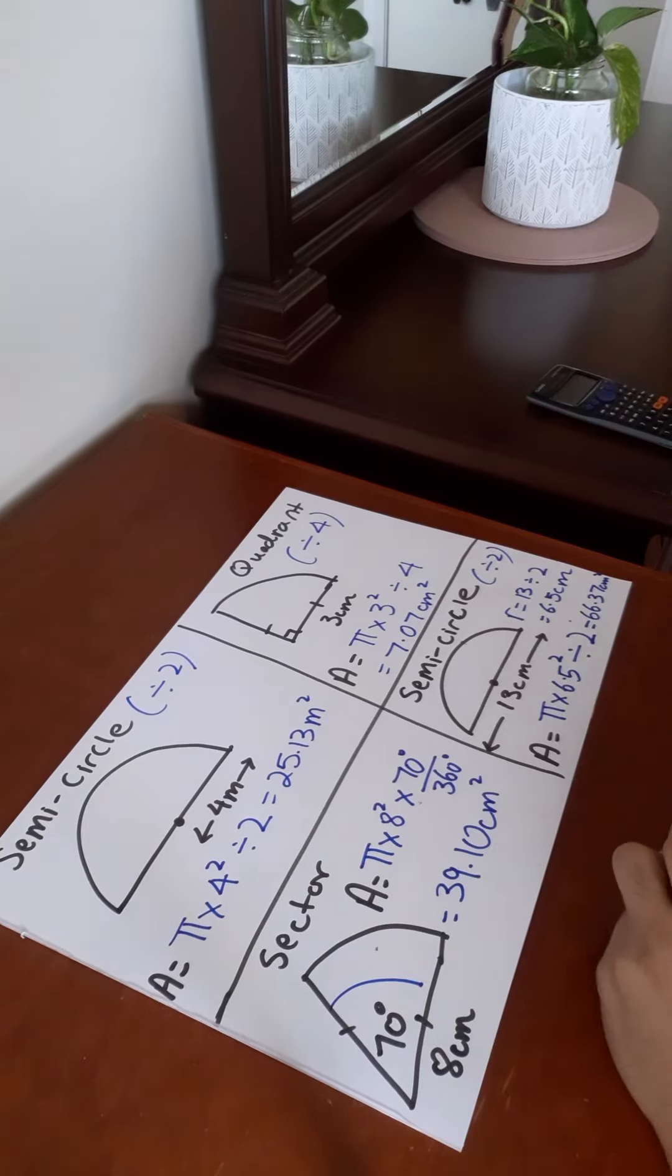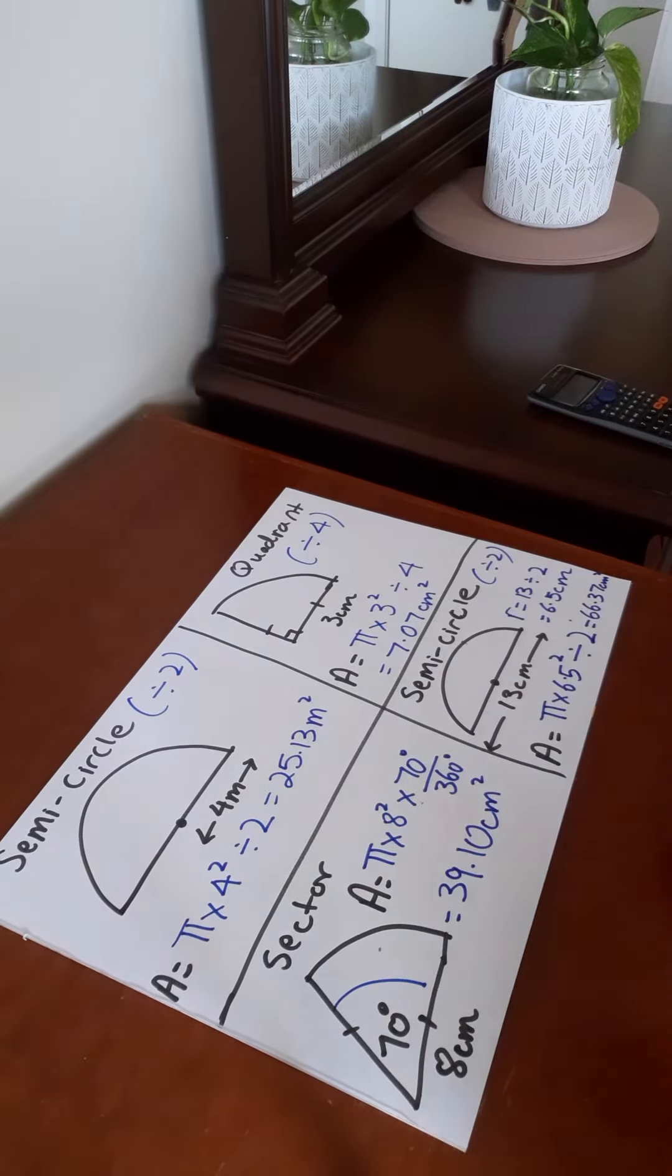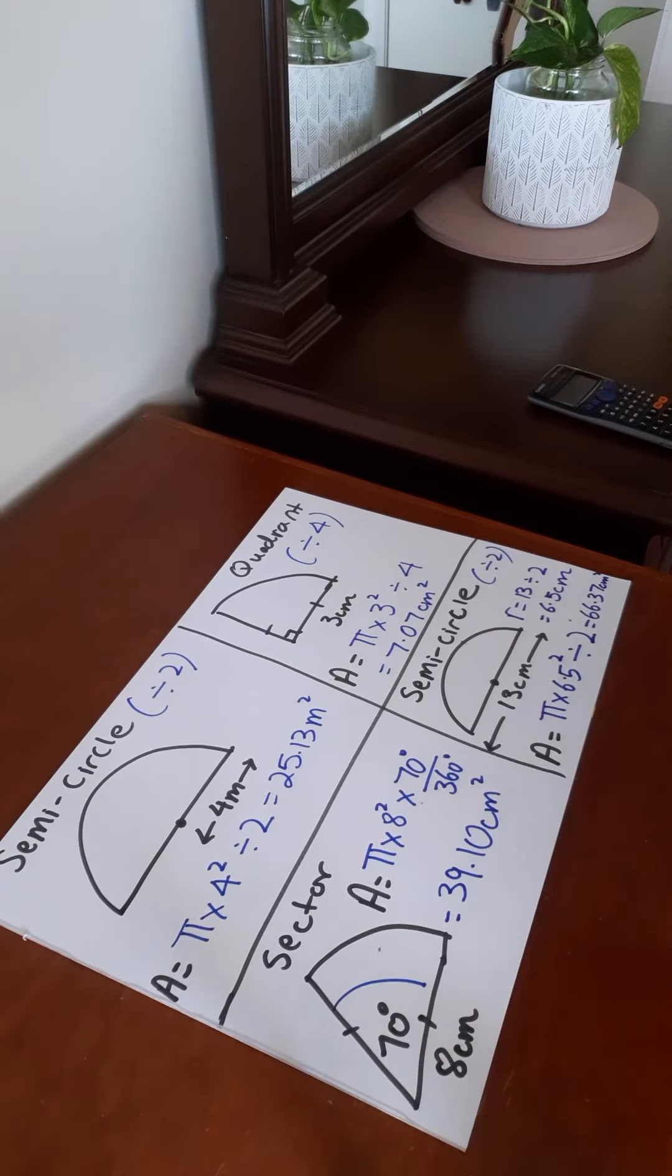And that is it. That's how you calculate the area of a semicircle, a quadrant and a sector. I hope you guys understand this. Any questions, please feel free to send me a message. This is Edgivacation signing out.